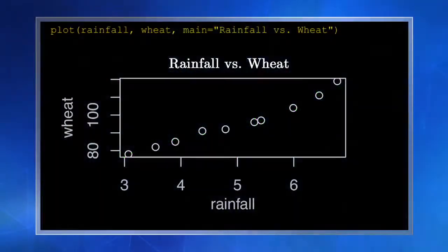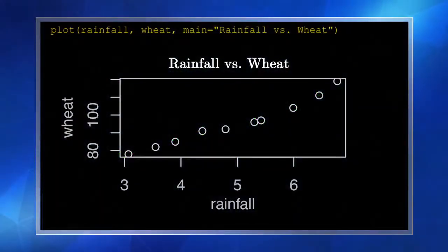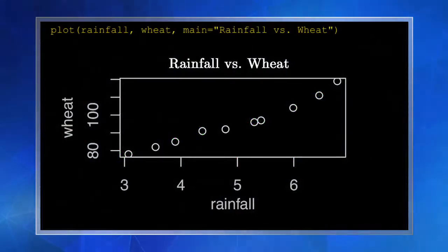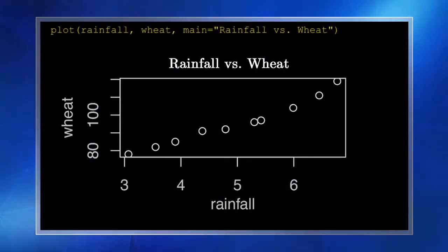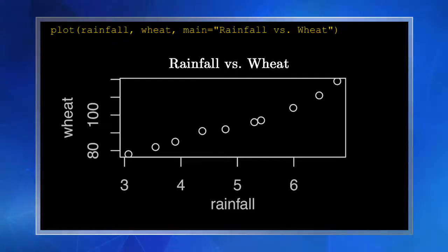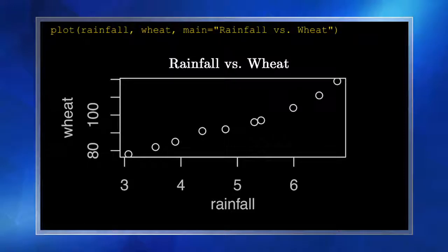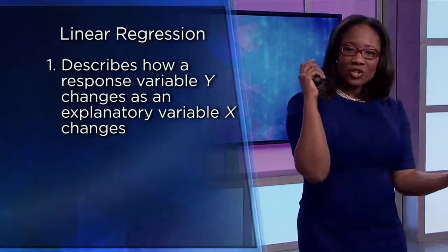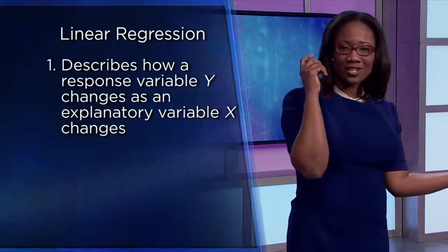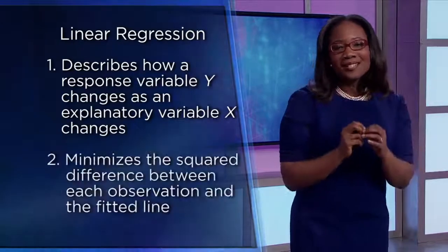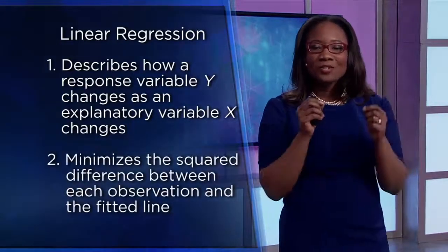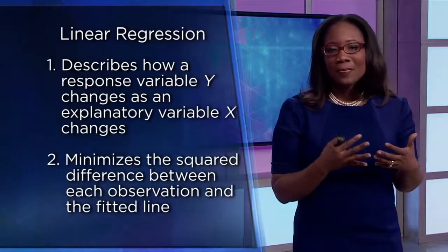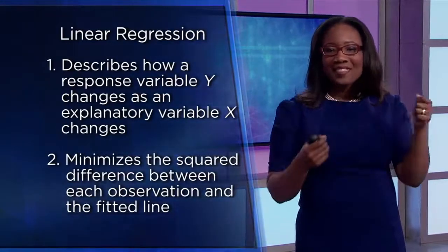Wheat ranges from 78 to 119 inches and has a mean of around 95.5. Now let's have a look at our scatter plot — we can see the data suggests there might be a nice linear relationship between rainfall and wheat yield. We can summarize that relationship by fitting a regression line. Our regression line is a straight line that describes how our response variable y changes as our explanatory variable x changes. It also allows us to minimize the square difference — we call these the residuals — the difference between each observation and the fitted line.